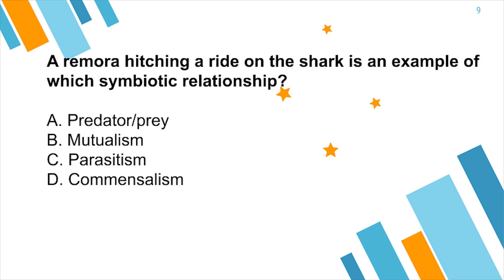We have one more question for you. A remora hitching a ride on the shark is an example of which symbiotic relationship? A. Predator or prey. B. Mutualism. C. Parasitism. Or D. Commensalism. The answer is commensalism. This is because the remora is benefiting — it receives a mini-shelter and free transportation. Meanwhile, the shark neither benefits nor is hurt.